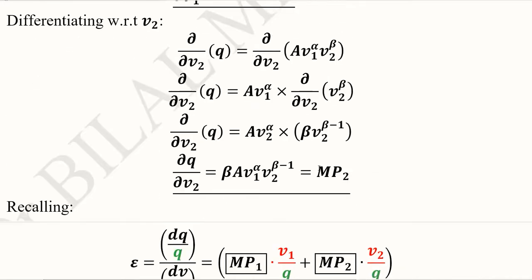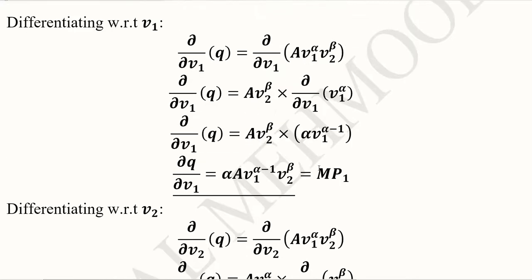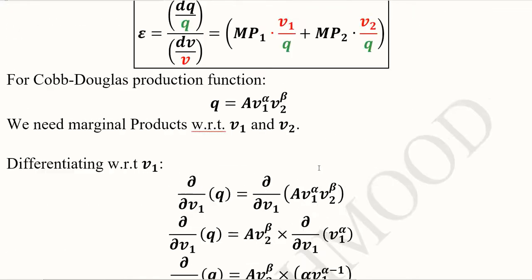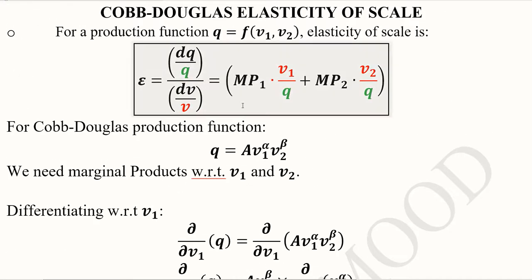The elasticity of scale helps us to find out if there is increasing, decreasing, or constant returns to scale, just like it is designed to help us. This is the process in which we found the elasticity of scale of the Cobb-Douglas production function by using this formula. The answer can help us interpret the type of production function we are dealing with. Thank you.